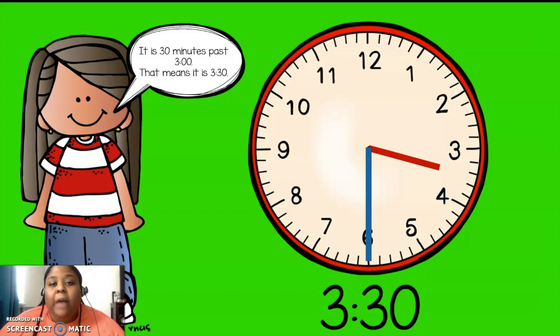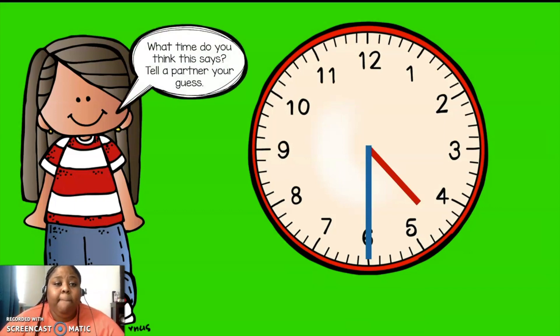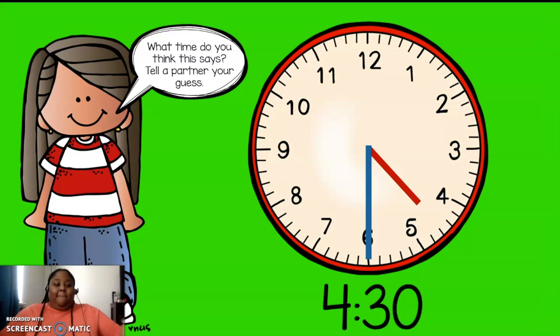Remember, digital clocks are on our iPads, our TVs, our cars. All right, here's another clock. What time do you think this says? Tell a partner your guess, or you could tell a grown-up. Give you some thinking time. It is 4:30. If you said 4:30, give yourself one Thor clap. Ready? Boom! I love those Thor claps.